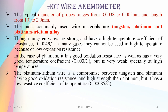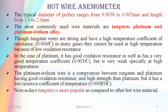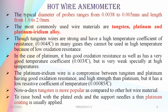Platinum-iridium has a lower resistance temperature coefficient of 0.00085 per degree Celsius. Nowadays, tungsten is more popular compared to other wire materials. Tungsten wire is used with plated ends and support needles, and a thin platinum coating is usually applied to the surface to define the sensing length.